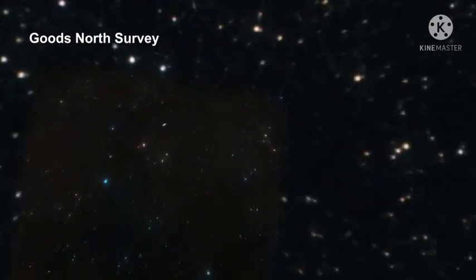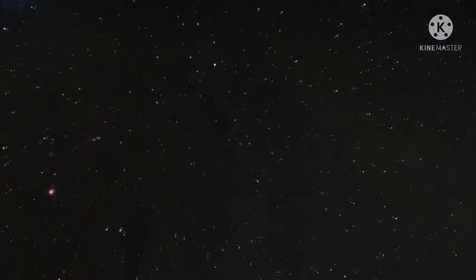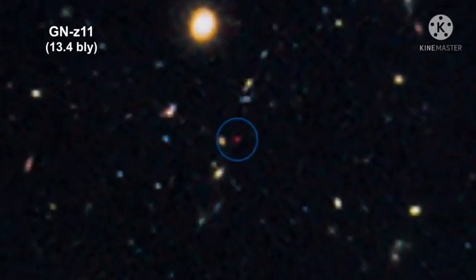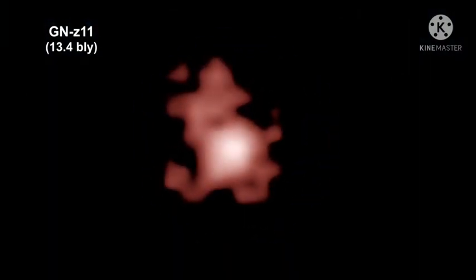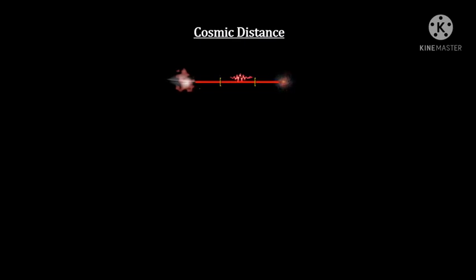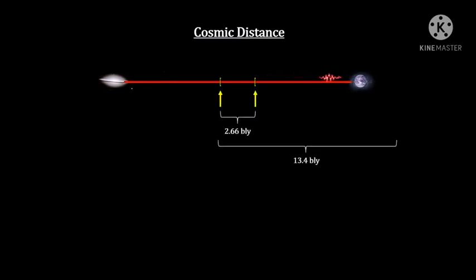Expanding space has significant implications for measuring distance. Here we are zooming into GN-Z11, the most distant object ever found. The galaxy's redshift, combined with Hubble's law, gives us the distance the light traveled, 13.4 billion light-years. And we know the speed of light, so the time traveled was 13.4 billion years. We normally say that the galaxy is therefore 13.4 billion light-years away. But during its long travel time, space expanded considerably. In fact, GN-Z11 was less than 2.7 billion light-years away from us when the light started its journey, and the galaxy is now over 30 billion light-years away. In order to calculate these distances, we need to know how the universe expanded during the light's journey.